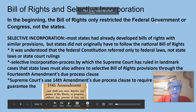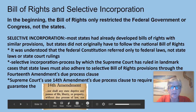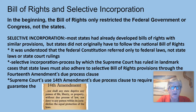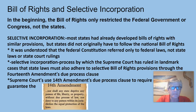The Bill of Rights and Selective Incorporation. In the beginning, the Bill of Rights only restricted the federal government or Congress, not the states. So states did not have to follow the Bill of Rights — freedom of speech, freedom of religion, and so on.